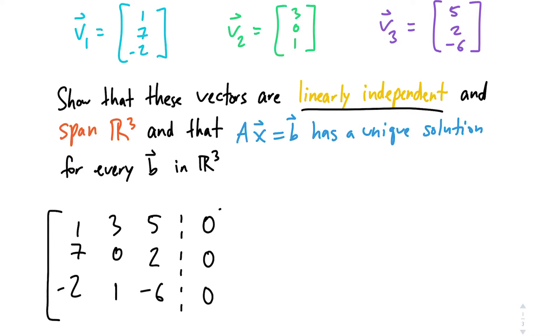So one way to figure out whether something is linearly independent is we want to see whether AX equals 0 has only the trivial solution. And what do I mean by trivial solution? We know that if you multiply any vector X by 0, 0, 0, you'll end up with the 0 vector.